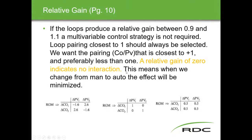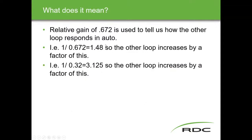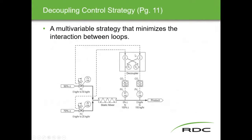So we have interactions between loops — proven that a change in one affects the other. How do we minimize that? The answer is a decoupling control strategy, which is used to minimize interaction between loops. A decoupler — it's a piece of software — takes the signal from one controller and provides a multiplier that gets added to the signal from the other controller going to the valve.